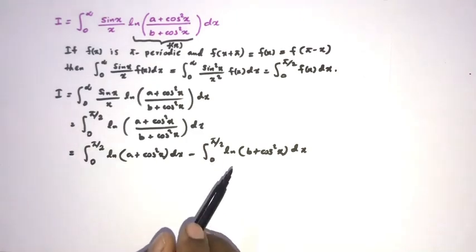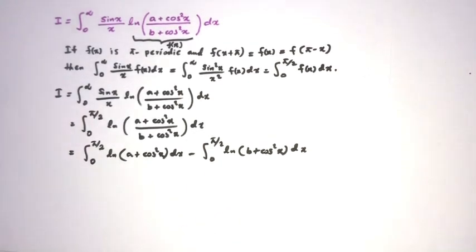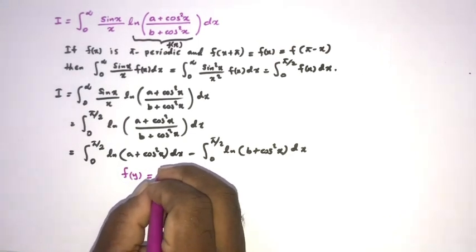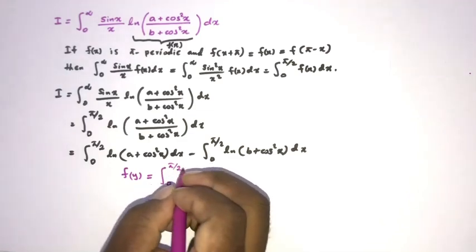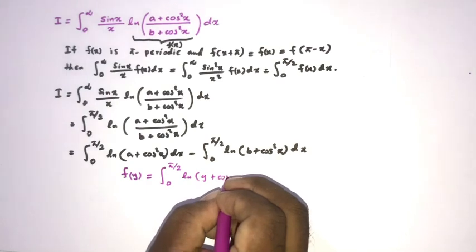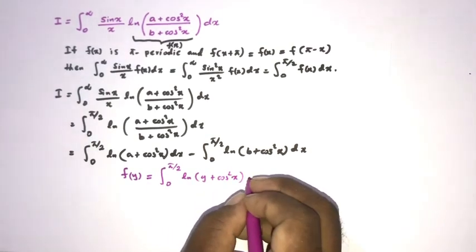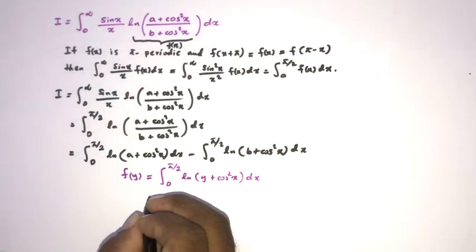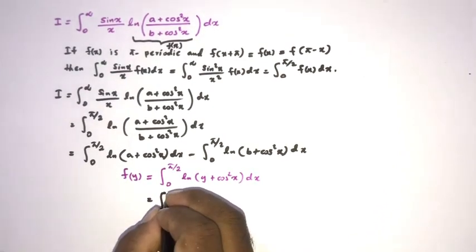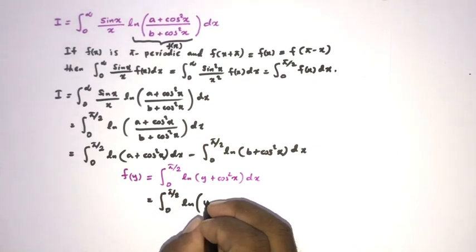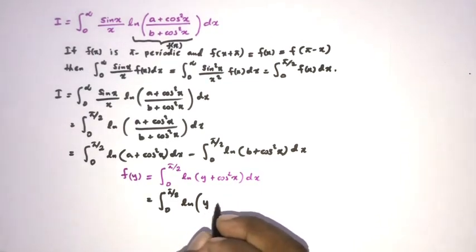Now we have the same type of integral, so I'm going to generalize it. Let f(y) be equal to the integral from zero to pi/2 of natural log(y + cos²x) dx. To evaluate this integral, I'm going to write the integral from zero to pi/2 of the natural log, where we multiply y by 1, and we know 1 = sin²x + cos²x.